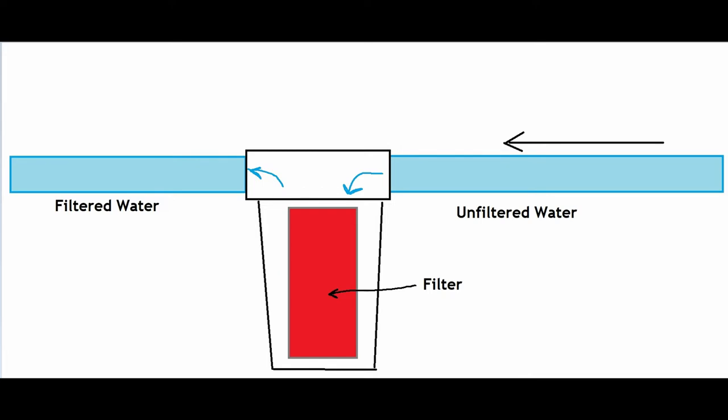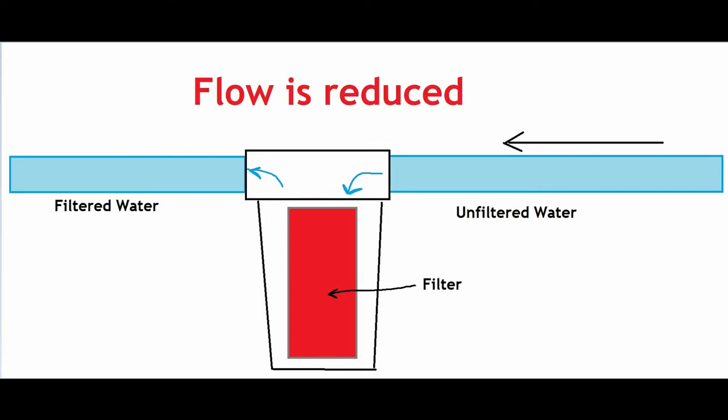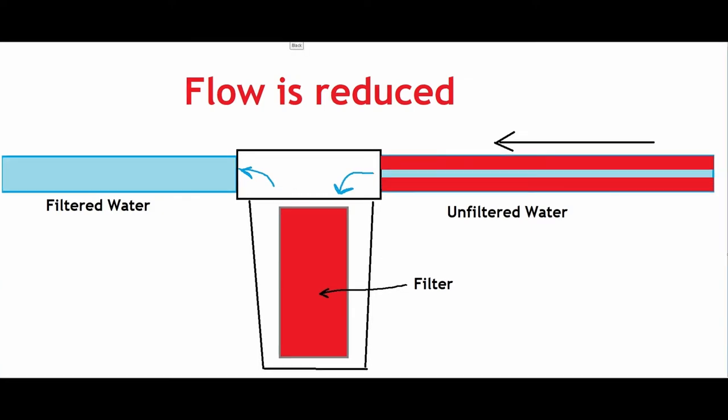As the flow gets reduced, the rust and mineral particles and yucky stuff start to build up on the walls of the pipe before the filter. This will continue to build up until the opening of the pipe is just big enough to only accommodate the reduced amount of flow that's going through the filter.